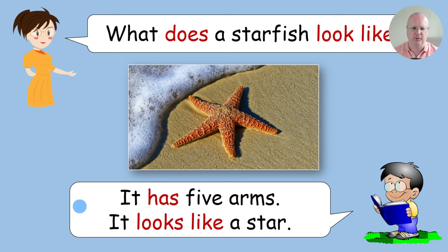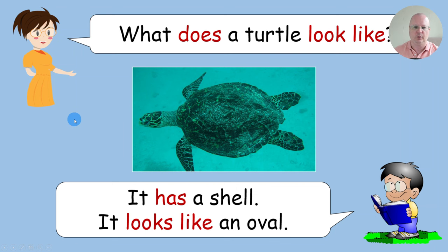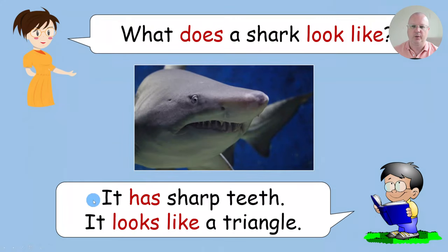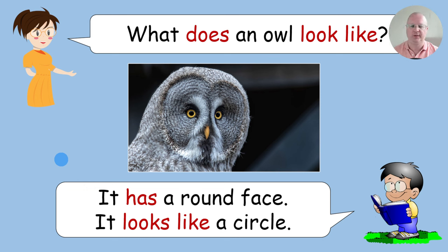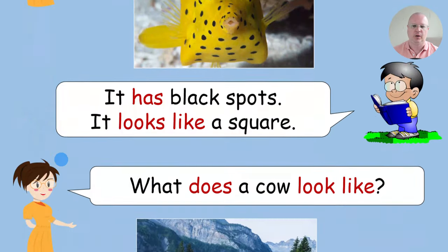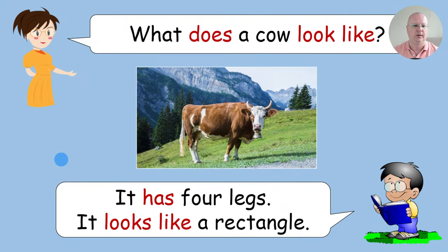Then you drill this together with the whole class. You ask the question and they read the answers — for example, what does a shark look like? It has sharp teeth. It looks like a triangle. You go through all these questions and answers, leading students into the final activity which concludes the lesson.